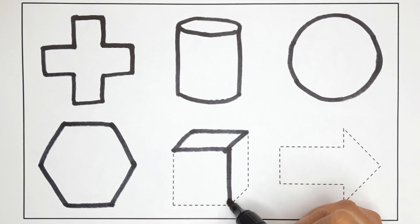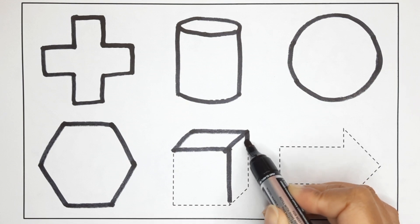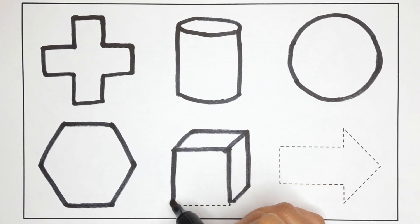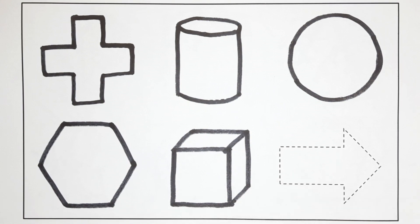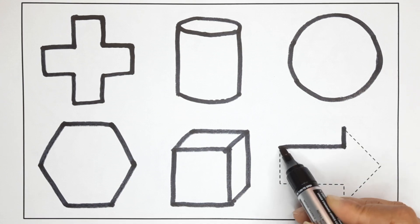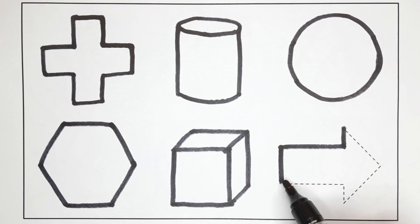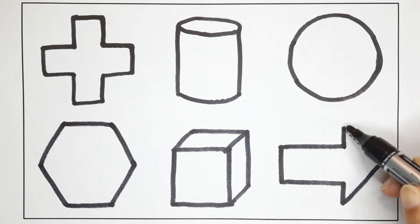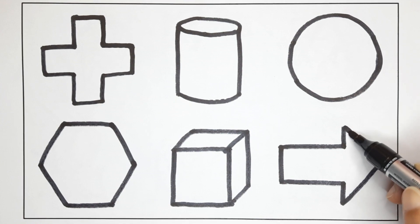Cube — here is cube, this is cube. Arrow — Arrow.